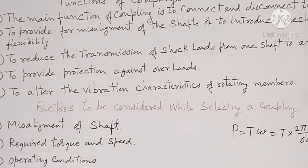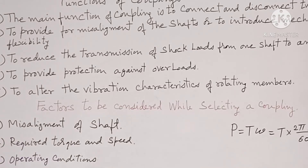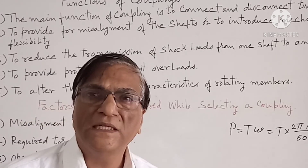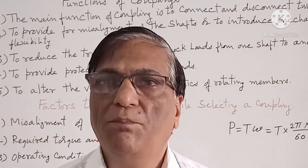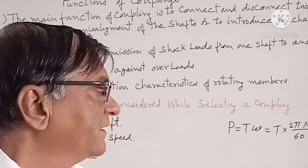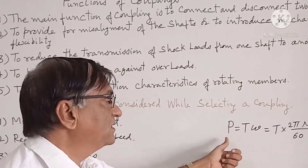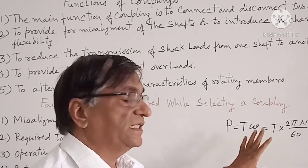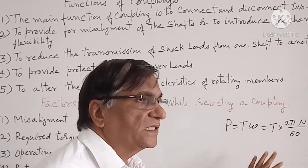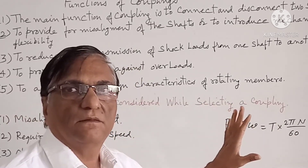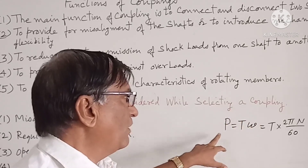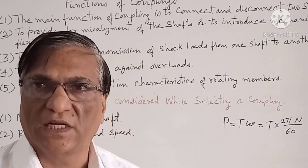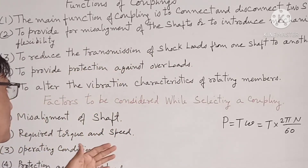Now we will study the factors to be considered while selecting a coupling. The main function of the coupling is to transmit power or torque, given by the formula P = Tω, where ω = 2πn/60. So while selecting the proper coupling, the power, torque, and speed or angular speed should be considered.